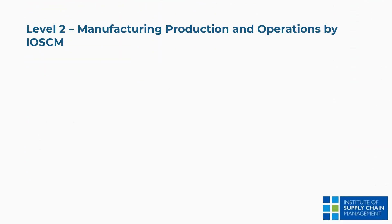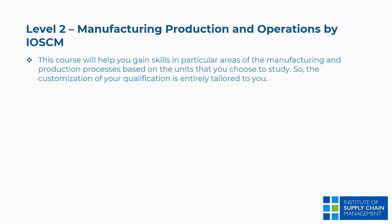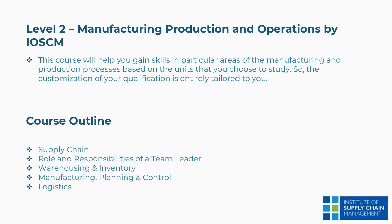Fifth is Level 2 Manufacturing Production and Operations by the Institute of Supply Chain Management. This course will help you gain skills in particular areas of the manufacturing and production processes based on the units you choose to study. The customization of your qualification is entirely tailored to you. The concepts covered are: supply chain, role and responsibilities of a team leader, warehousing and inventory, manufacturing planning, planning and control, logistics, and more.